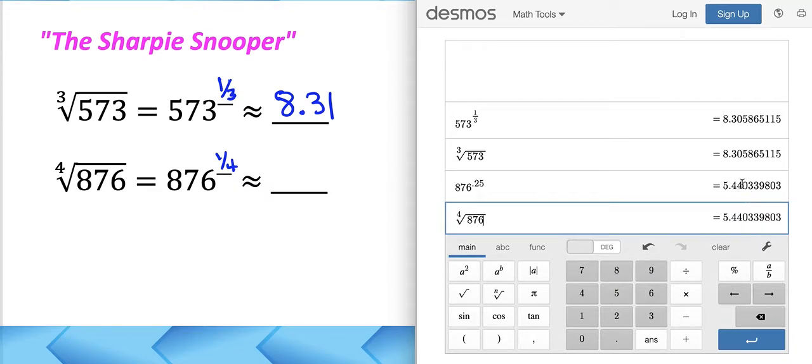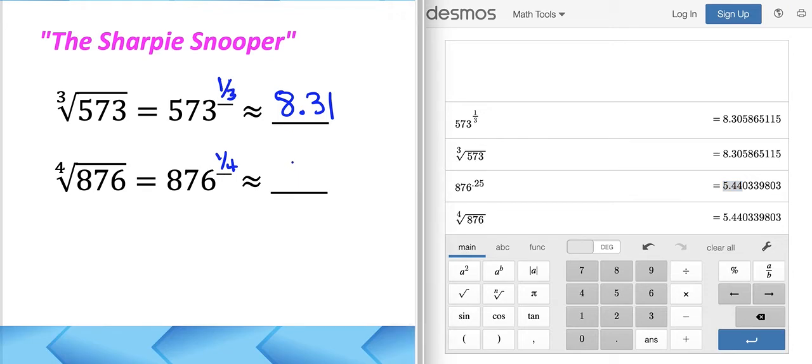Hey, what do you know? You've got the same number. To the nearest hundredth, it's going to be 5.44. So here we go. 5.44.